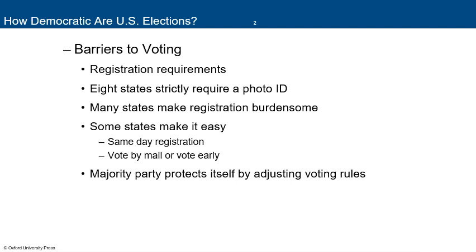We need to consider what the barriers are to voting and if there should be barriers to voting — this is a big issue lately. We have registration requirements; each state sets their own. Eight states strictly require a photo ID, and Texas is among them. Many states make registration very burdensome, and Texas is at the lead of that, especially after the most recent state election laws that were passed and took effect in September.